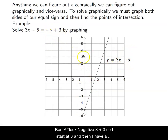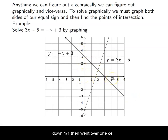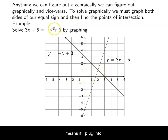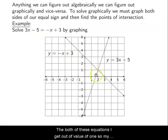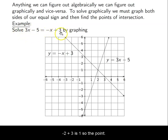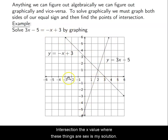Then I plot -x + 3: I start at 3 and I have a negative slope, going down 1 over 1 repeatedly. The place where these two lines intersect is my solution. So my solution is at the point (2, 1), which means if I plug in 2 to both equations, I get out a value of 1. The x-value where these things intersect is my solution.